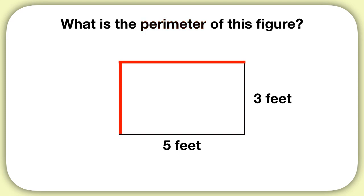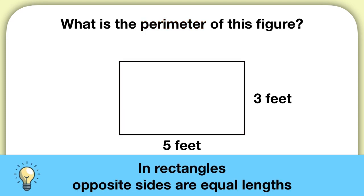Luckily for us, in rectangles, opposite sides are equal lengths. So we can see because this side is 5 feet long, it means this opposite side will also be 5 feet long. And because this side is 3 feet long, it means the opposite side will also be 3 feet long.